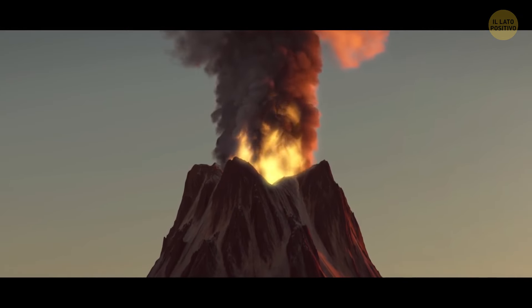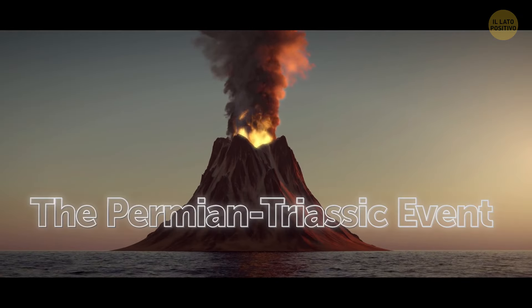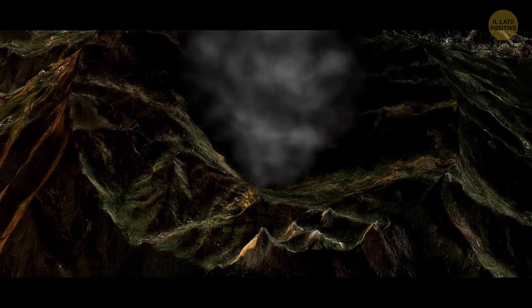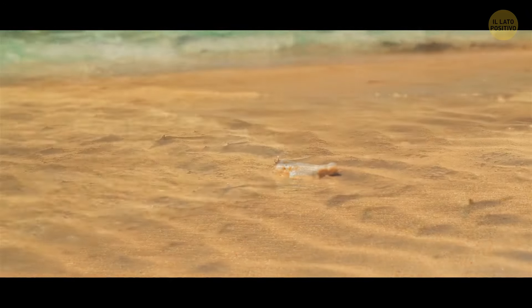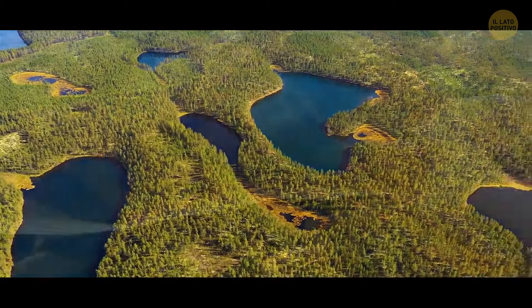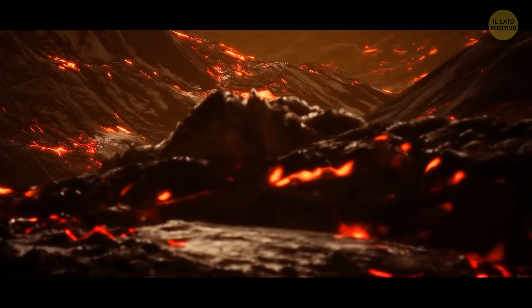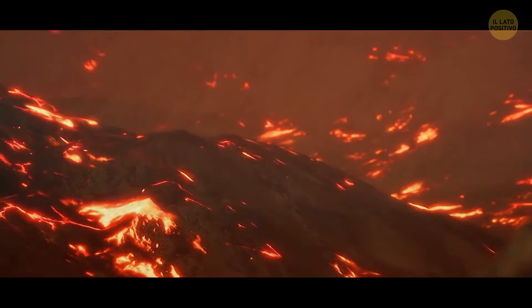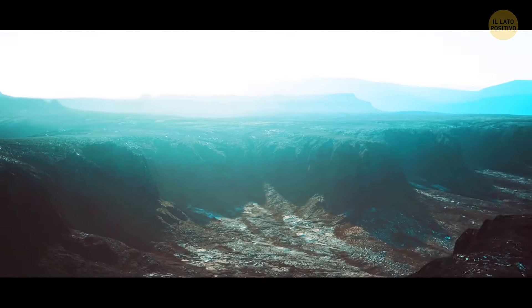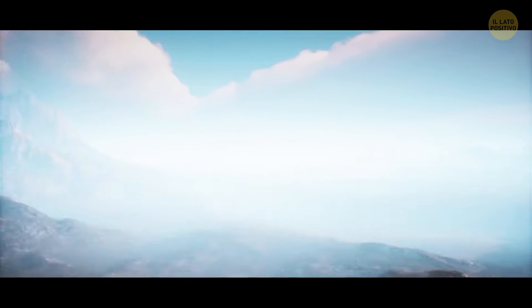But the worst this planet has ever seen was the Permian-Triassic event about 250 million years ago. 80% of marine life, 70% of land animals and plants – all gone. Volcanoes spewed out a colossal amount of lava, where modern-day Siberia is. But it affected the entire planet.